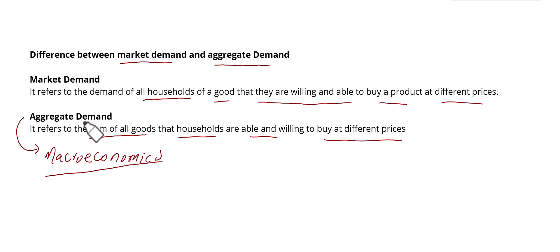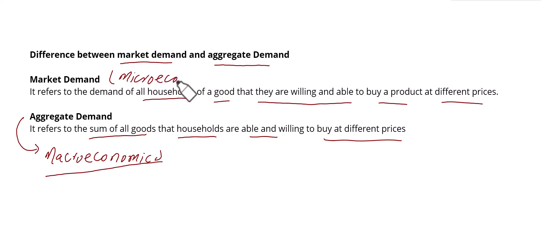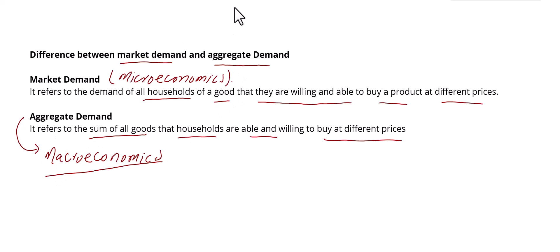This is the major difference between market demand and aggregate demand. Market demand is a microeconomics phenomenon, while aggregate demand is a macroeconomics phenomenon.